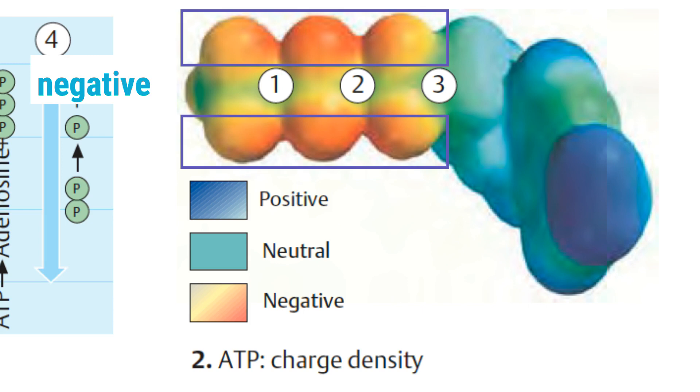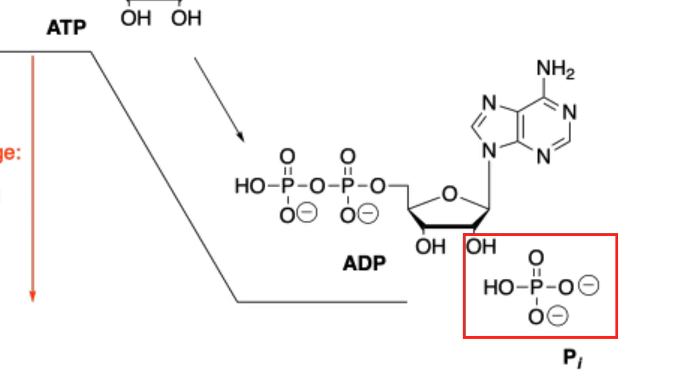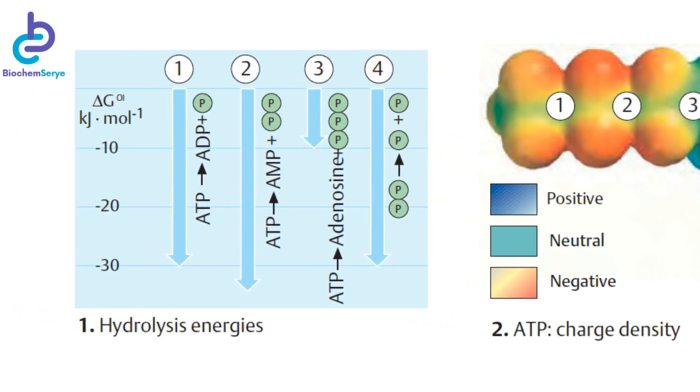One of the reasons for the instability of phosphoric anhydride bonds is the repulsion between these negatively charged oxygen atoms, which is partly relieved by cleavage of a phosphate residue. In addition, the free phosphate anion formed by hydrolysis of ATP is better hydrated and more strongly resonance-stabilized than the corresponding residue in ATP. This also contributes to the strongly exergonic character of ATP hydrolysis in standard conditions.